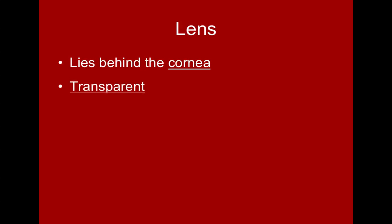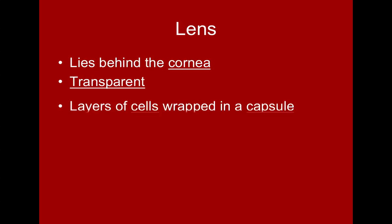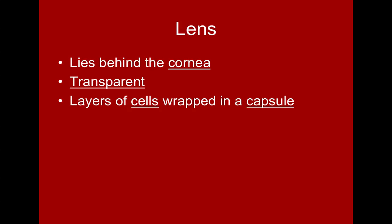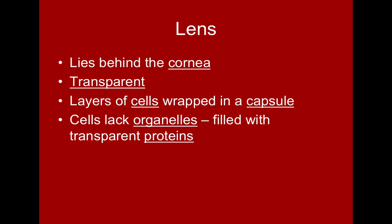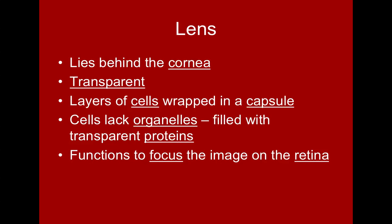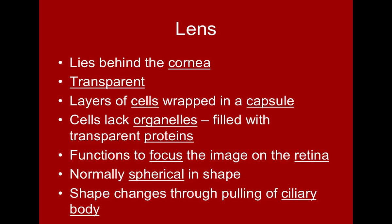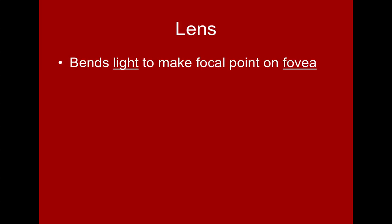The lens lies behind the cornea and is transparent like the cornea. While the cornea is made of collagen fibers, the lens is made up of cells wrapped within a capsule. These cells lack organelles and instead have been filled with a transparent protein. The lens's job is to focus the light rays at the back of the retina — we change its shape through the ciliary body. We aim the focal point at the fovea because that's where we get our clearest, sharpest vision.